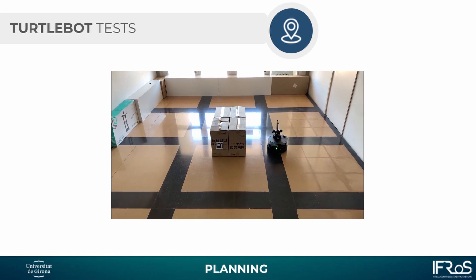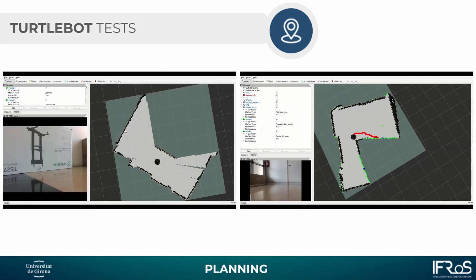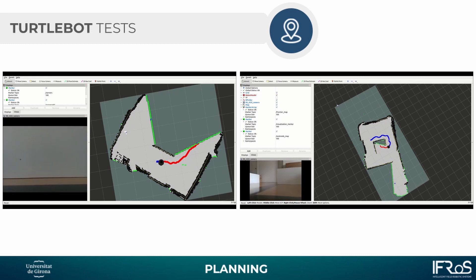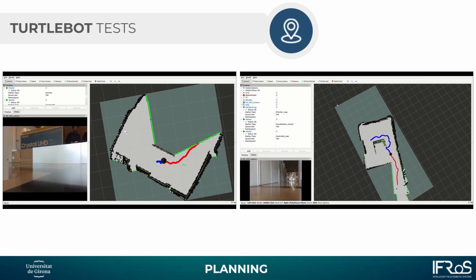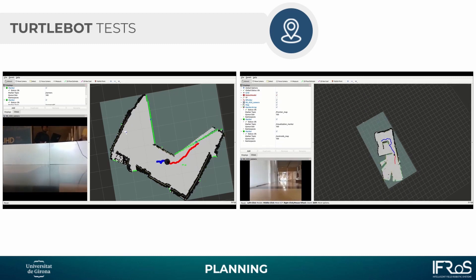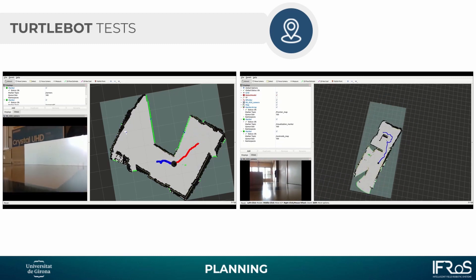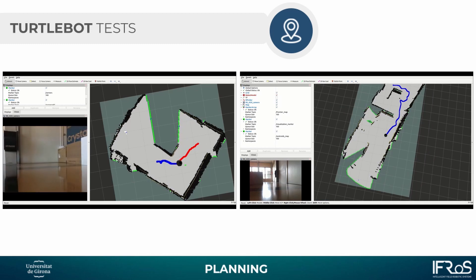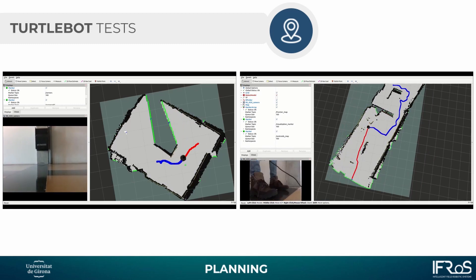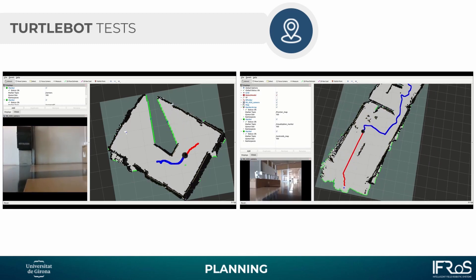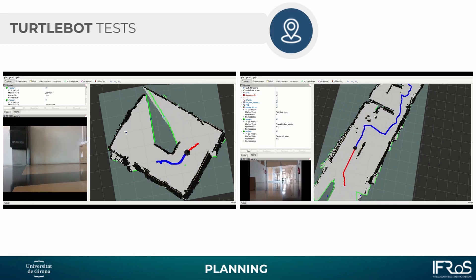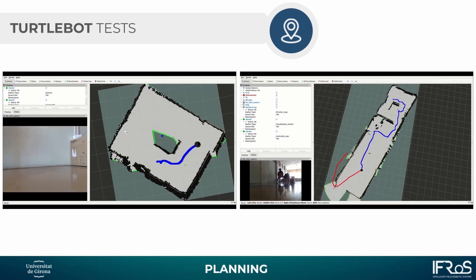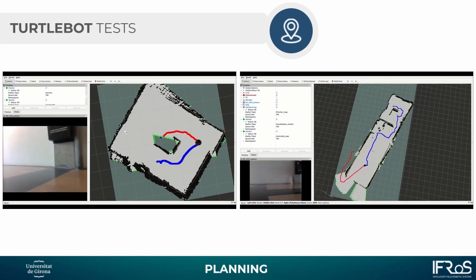This is an environment that we have created for the testing of the real robot. On the left you can see the robot running in this controlled environment and it is trying to map the whole environment. On the right we have an uncontrolled environment where the robot is set free and it is trying to explore the whole university building, going through the halls and trying to map everything that it can see.